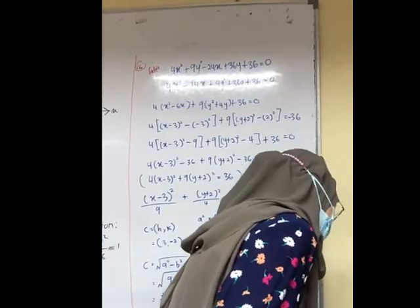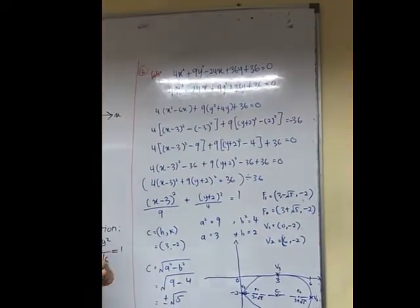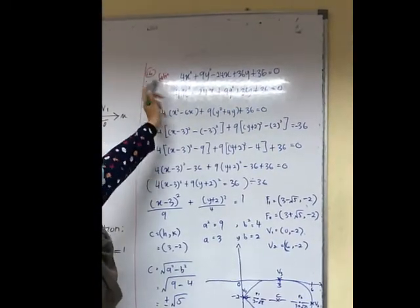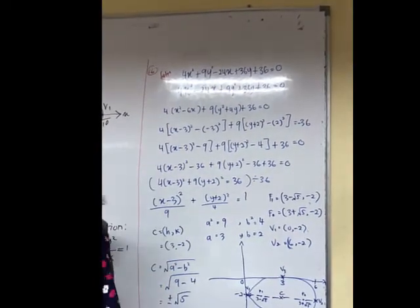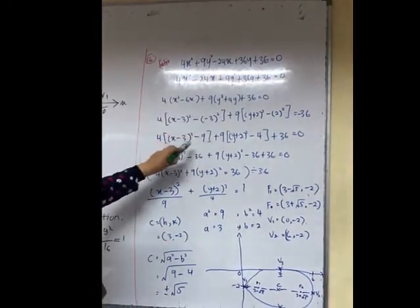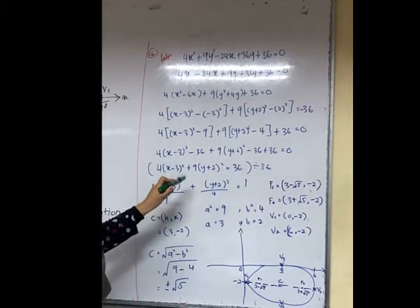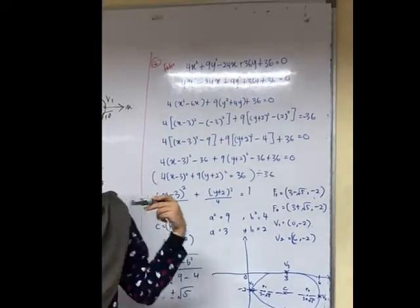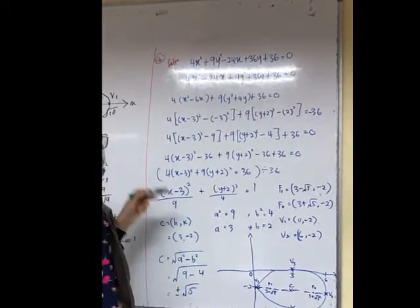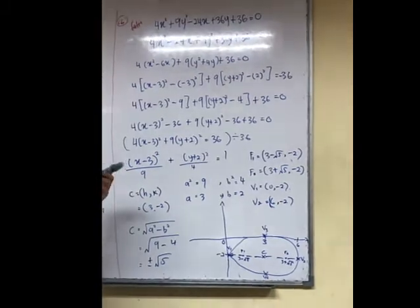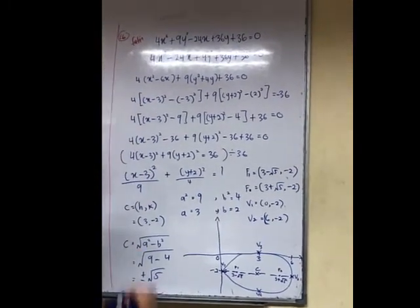How to find center and vertices. So we arrange first, group x with x, y with y. And then we start using completing the square. We want to get this equation in the form of general equation of ellipse. So we divide by 36.